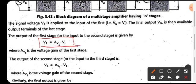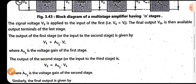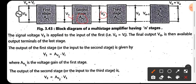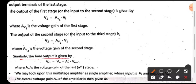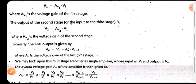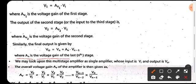For the first stage, the output voltage V1 equals Av1 times the input voltage, where Av1 is the voltage gain of the first stage. For the second stage, V2 equals Av2 times V1. Similarly, the final output Vn equals Avn times V(n-1), where Avn is the voltage gain of the last Nth stage.